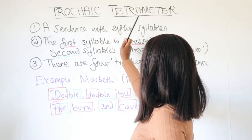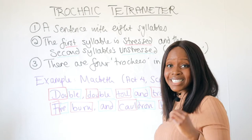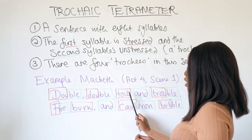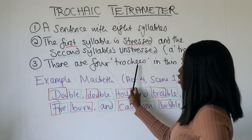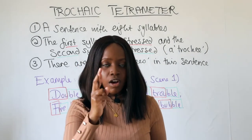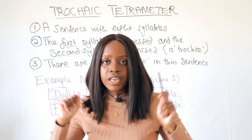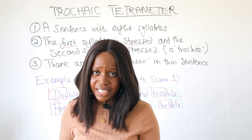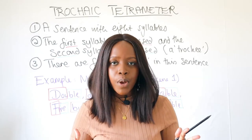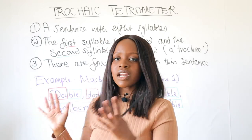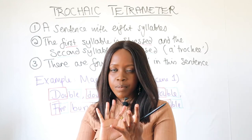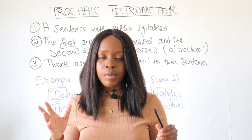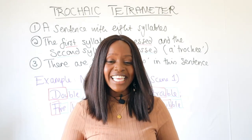To recap: trochaic tetrameter is just a fancy way of saying a line with eight syllables — first stressed, second unstressed, third stressed, fourth unstressed, and so on, with four trochees total. Always try to go the extra mile when analyzing poetry or plays to see if there's any example of this. Not all poets use it consistently — even Shakespeare alters the rhythm throughout Macbeth — but spotting where and why a writer uses this technique is a great way to strengthen your analysis.